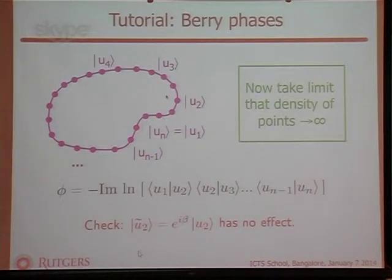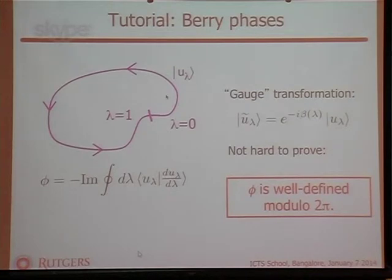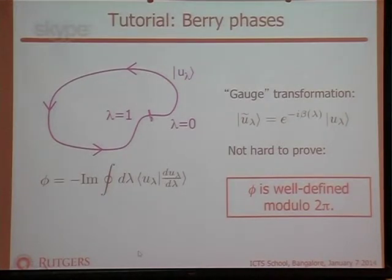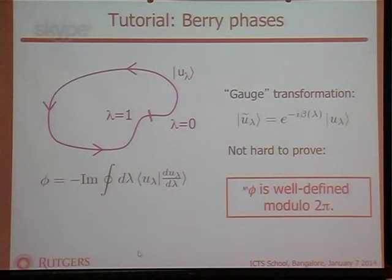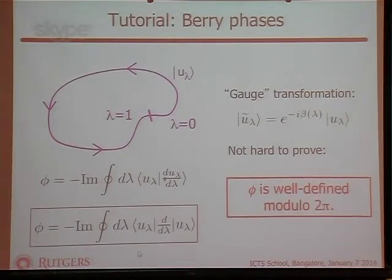Taking the density of points finer until we reach a continuum version: a quantum mechanical wave function taken adiabatically around a closed loop where λ=0 and λ=1 label the same point. The continuum Berry phase is the integral around the loop of ⟨u_λ | ∂/∂λ | u_λ⟩. This formula is usually written in the more symmetrical form with the derivative sitting in the middle. The Berry phase is independent of how you twist the phases of the wave functions — it can only change by 2π.